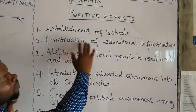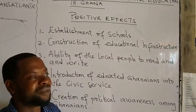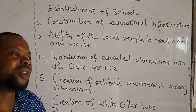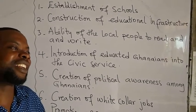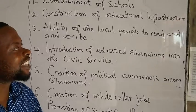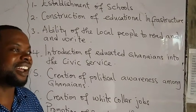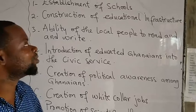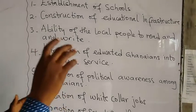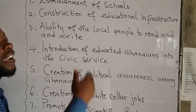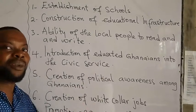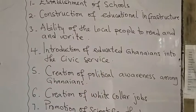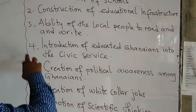We also have the construction of educational infrastructure. It simply means that when they say school, you can't do it under a tree. These days, we can still experience that in other parts of Ghana where some school activities are held under trees because they don't have classrooms. So those people help us understand that when we say school, we need a building.